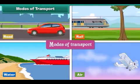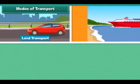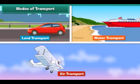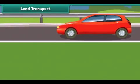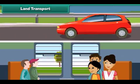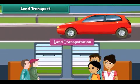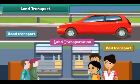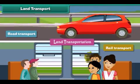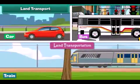Modes of transport can be broadly divided into three categories: land transport, water transport, and air transport. The movement of goods and passengers on land is known as land transport. Land transport is of two types: road transport and rail transport. The vehicles that carry passengers and goods by land, such as cars, buses and trains, are called means of land transport.